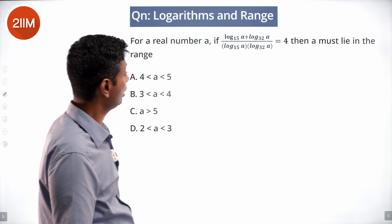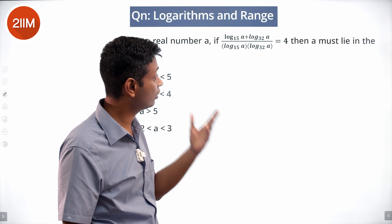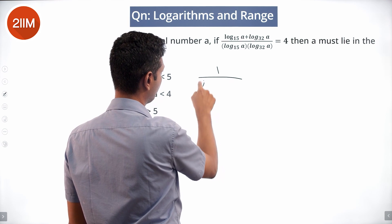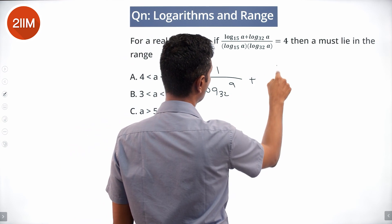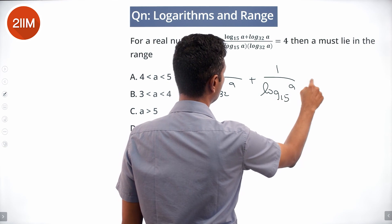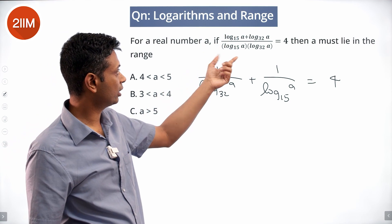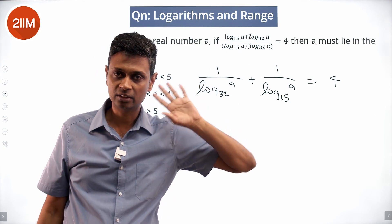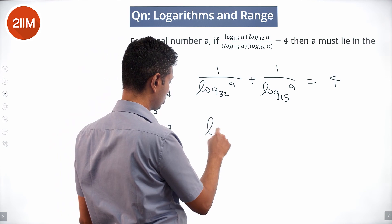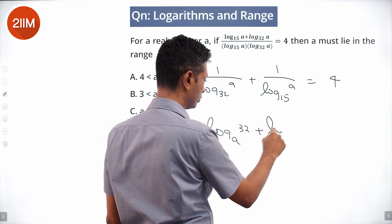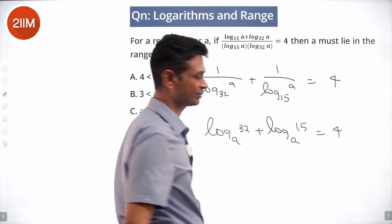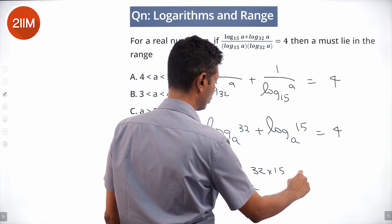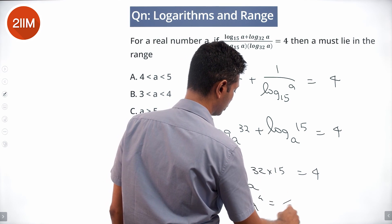For a real number A: [log_A(15) + log_A(32)] / [log_A(15) · log_A(32)] = 4. This is of the form (a+b)/ab = 1/b + 1/a, so: 1/log_A(32) + 1/log_A(15) = 4, which equals log_32(A) + log_15(A) = 4, or log_{480}(A) = 4... wait: log base A of (32 × 15) = 4, so A^4 = 480.